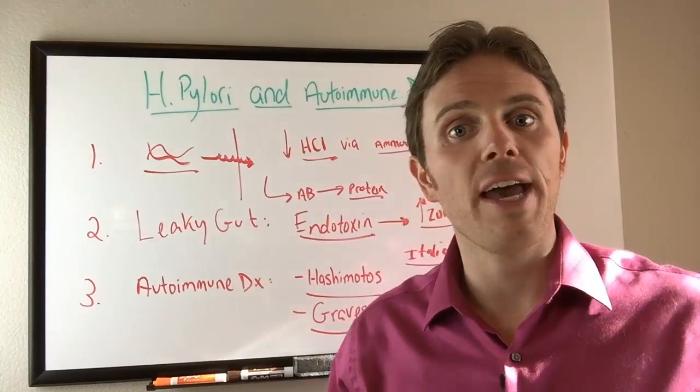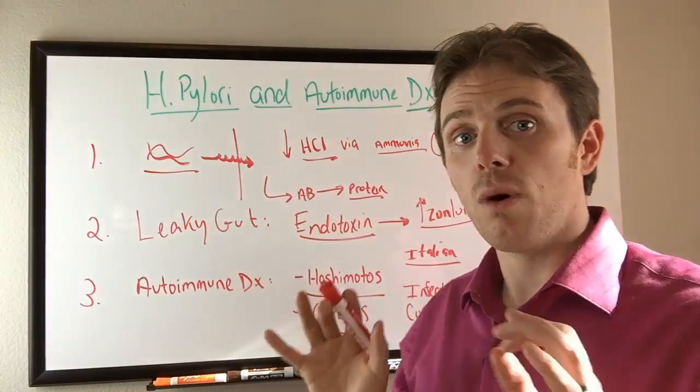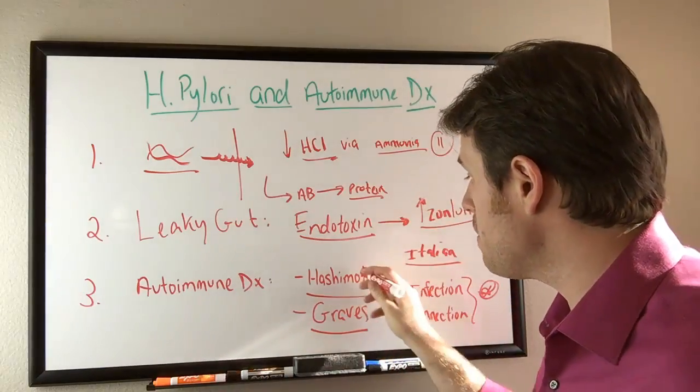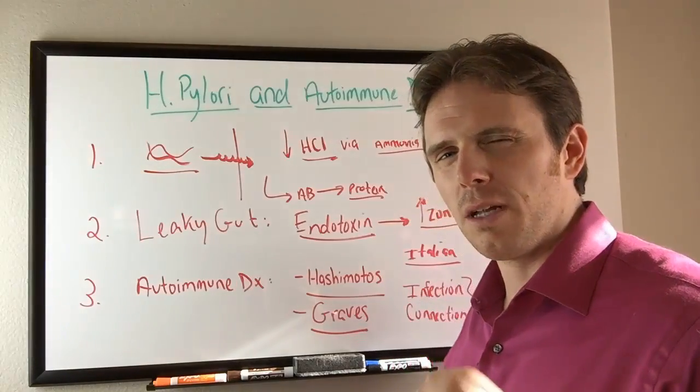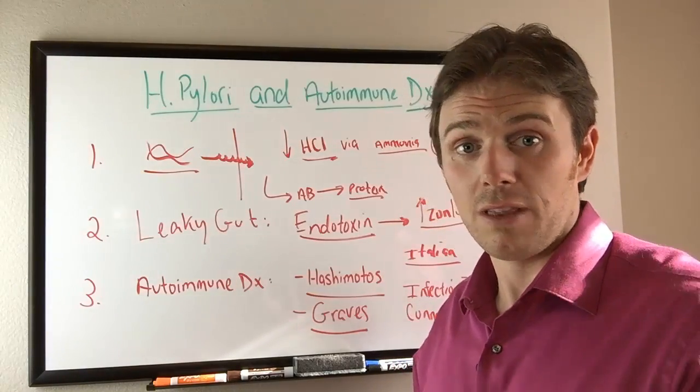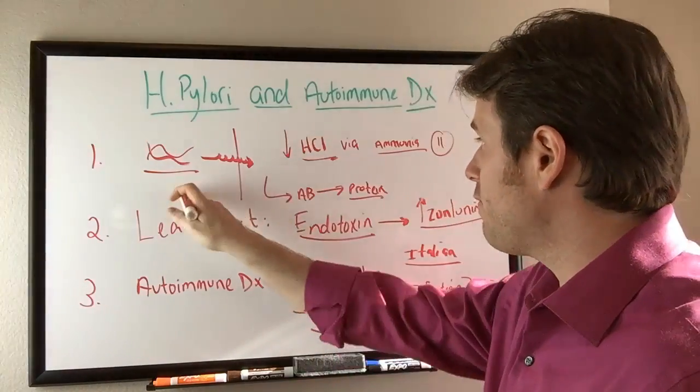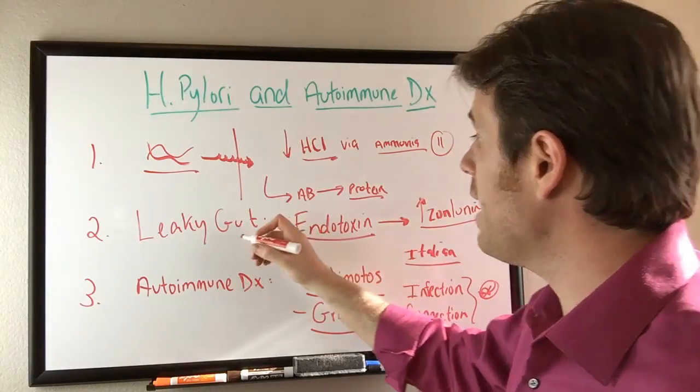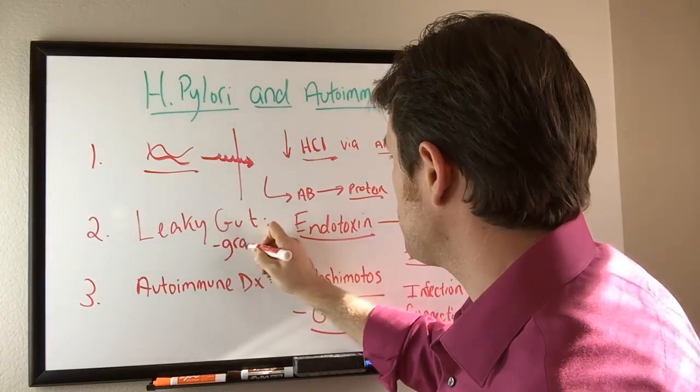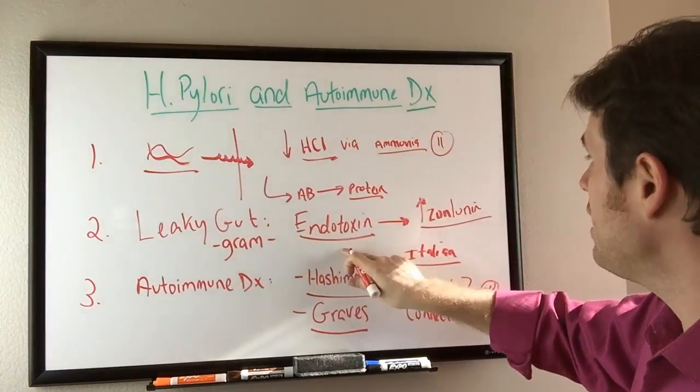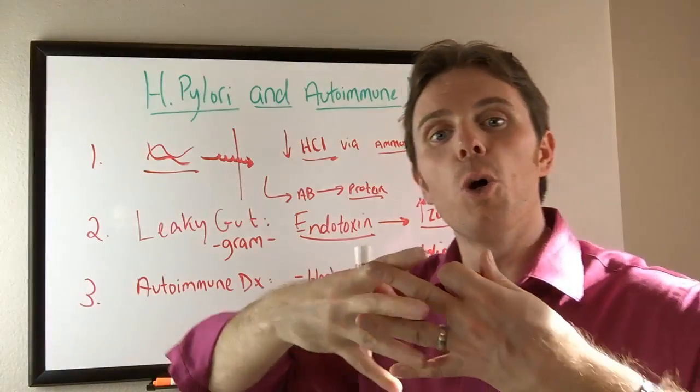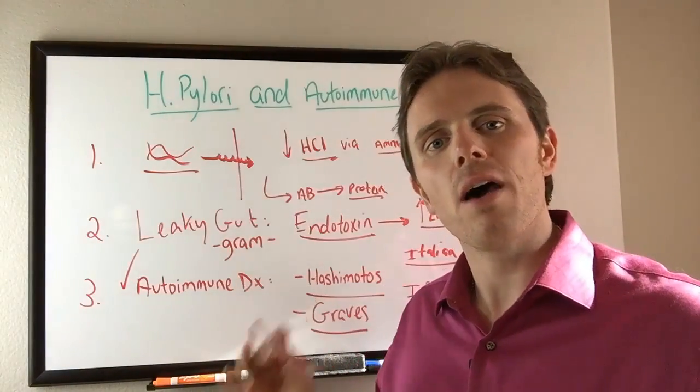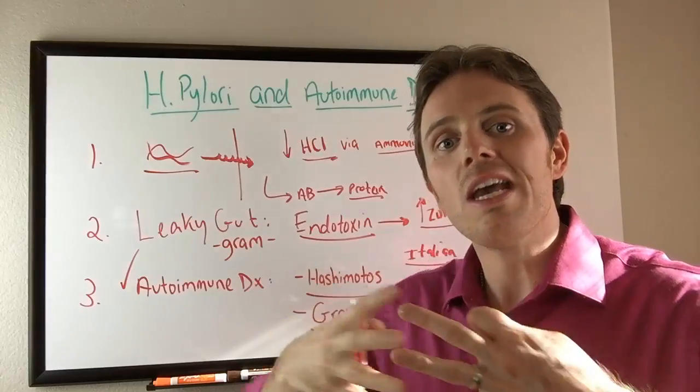So when we see these gut infections, whether it's H. pylori, we see a strong connection with autoimmune disease and we even see it with Hashi's and Graves. There's even studies looking at Alzheimer's and dementia with H. pylori and even Lyme's as well. But again, because of the effect on HCL which is known, and because of the effect on endotoxin, because it's a gram-negative bacteria, endotoxin can increase zonulin, which can then open that gut up and increase more autoimmune disease. So this is the mechanism that we're seeing today with autoimmune conditions, with thyroid conditions, and with leaky gut.